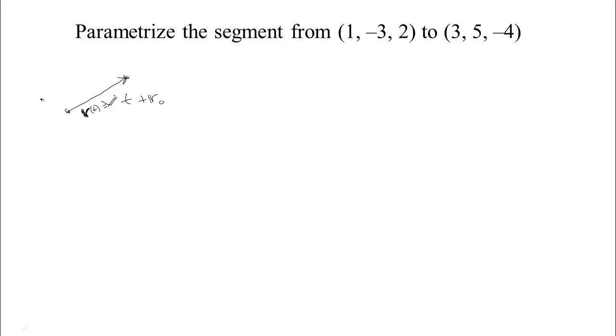Let's see how that would go in this case. We have our point here at 1, negative 3, 2. We want a segment that would go from there to the point 3, 5, negative 4. So our first step is to get that vector v.